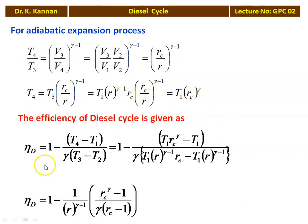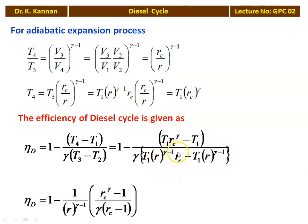Taking the efficiency equation again: eta = 1 − (T4 − T1) / [gamma(T3 − T2)]. Substituting T4 = T1·R_C^gamma, T3 = T1·R^(gamma−1)·R_C, and T2 = T1·R^(gamma−1) — T1 cancels throughout. Taking R^(gamma−1) as common denominator from the denominator terms, the efficiency of the Diesel Cycle becomes: eta_D = 1 − (1/R^(gamma−1)) · [(R_C^gamma − 1) / (gamma · (R_C − 1))].